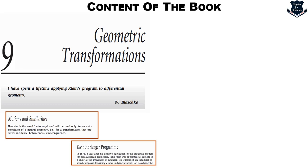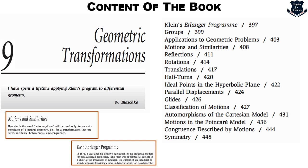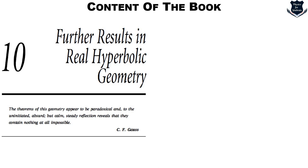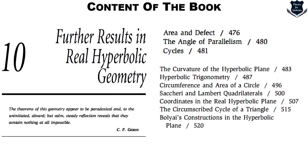Let us pause and appreciate how well this book is organized. It starts with history, then goes into mathematics, then teaches you logic, then returns to the history of the parallel postulate, then back to mathematics, then to philosophy, and finally geometric transformations. The tenth chapter deals with further results in hyperbolic geometry — hyperbolic trigonometry, Saccheri-Lambert quadrilaterals, Bolyai's construction, and related topics. Finally it contains appendices on elliptic and other Riemannian geometries, and Hilbert's geometry without real numbers.